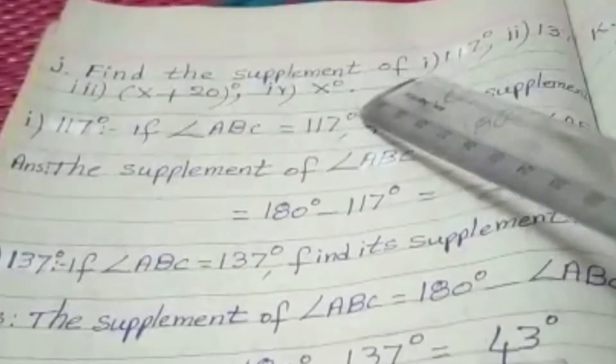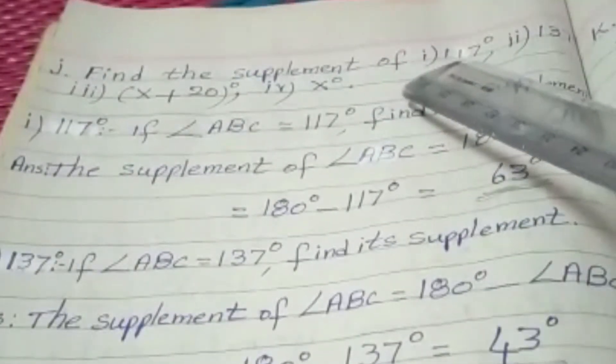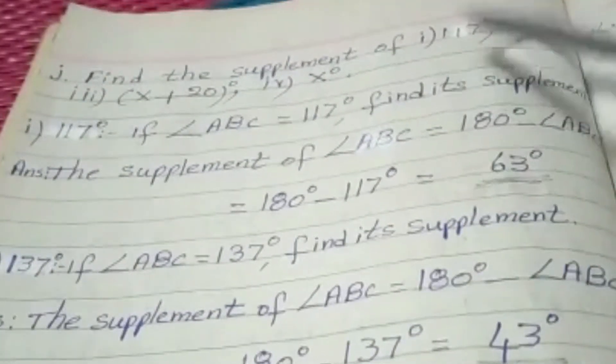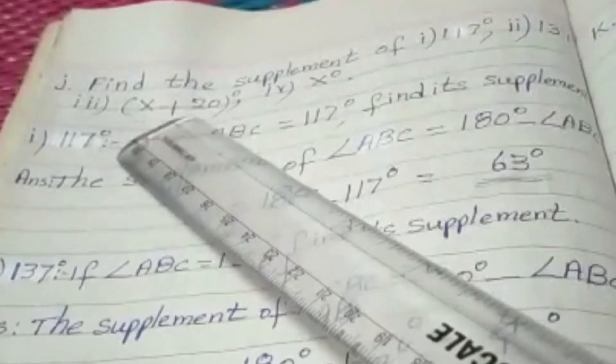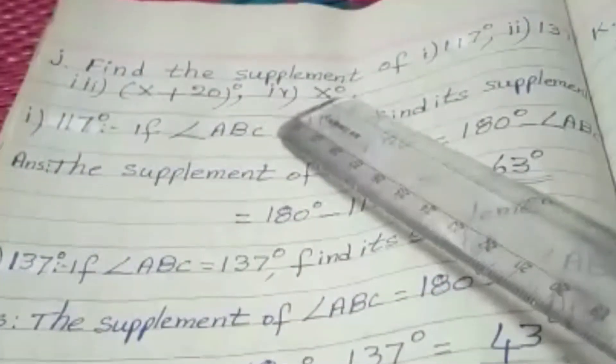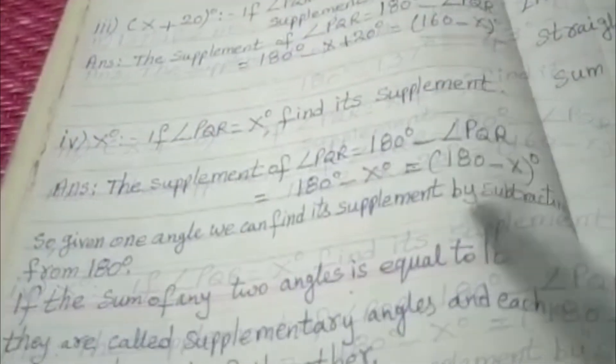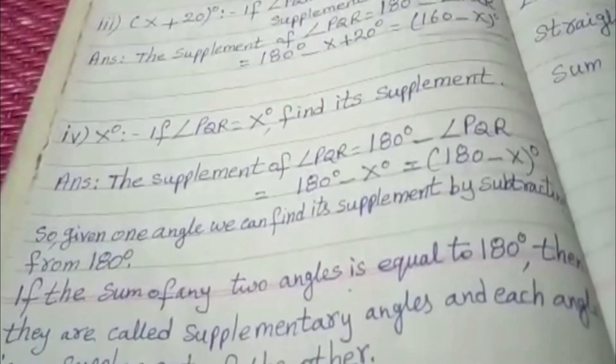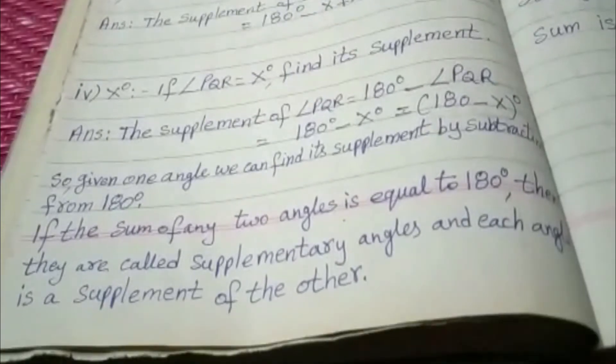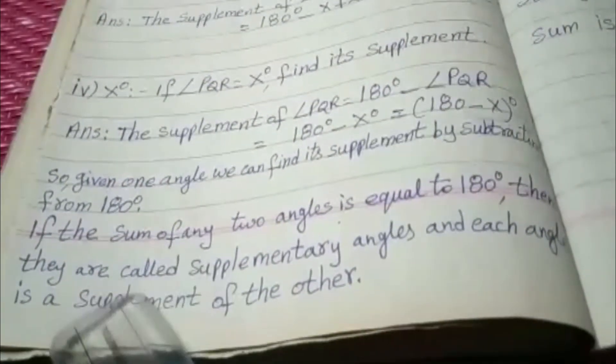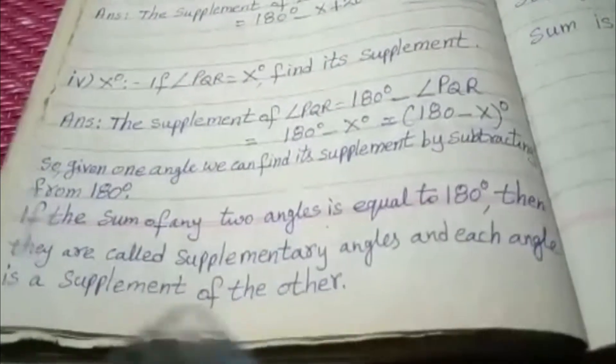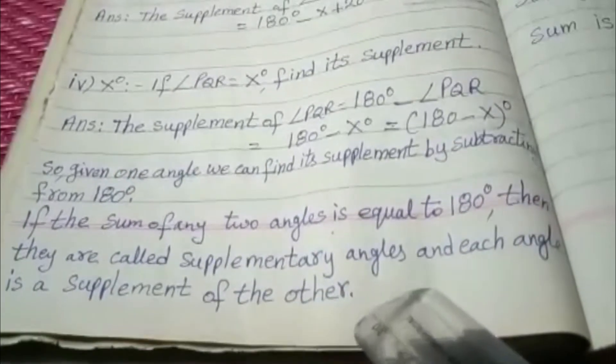Find the supplement of 117 degrees, 137 degrees, X plus 20 degrees, and X degrees. What is the meaning of supplementary angles? If any two angles is equal to 180 degrees then they are called supplementary angles and each angle is a supplement of the other.